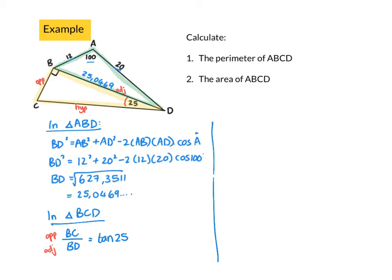I said opposite over adjacent. I know what BD is. I've already worked it out. So I'm going to say BC is BD, 25.0469, times tan of 25. If I was using a calculator, I wouldn't have even erased the number before and just used the answer. So what I get is 11.6795. Let's put that into my sketch: 11.6795.